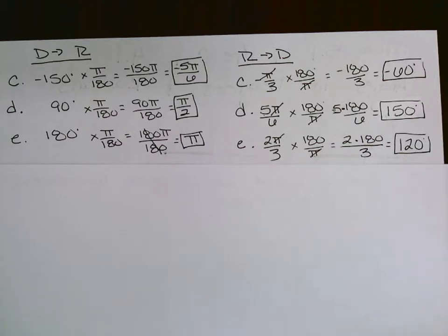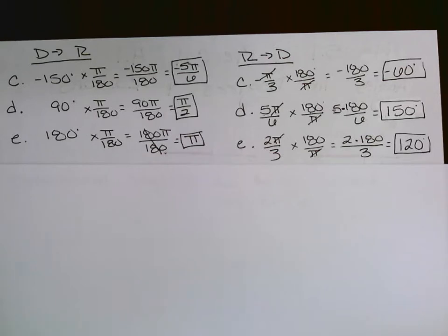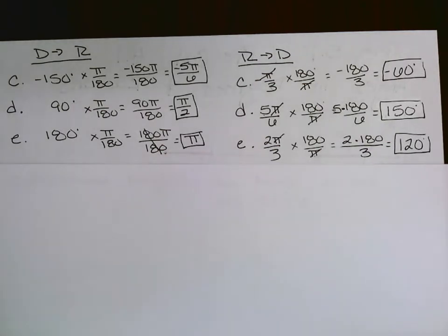A word you'll hear a lot this year is coterminal. Think of it like reducing a fraction: you're trained to write 4 over 8 as 1 over 2 — a cleaner, more standard form. Coterminal does the same thing with angles. A standard, clean, reduced form of an angle in degrees or radians means it falls within one circle.